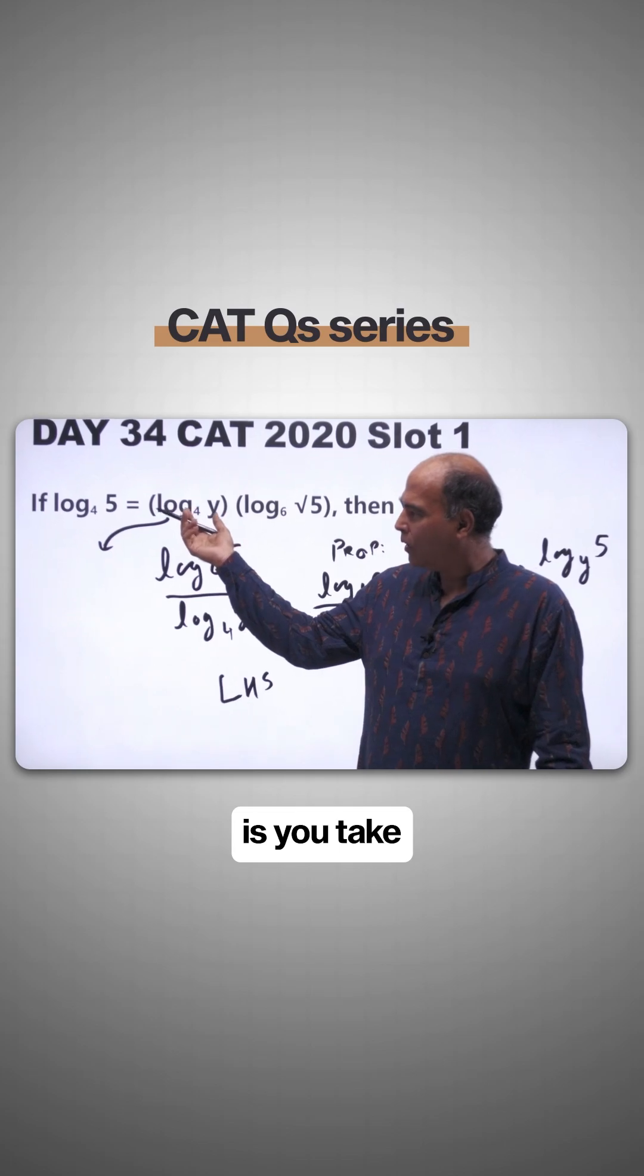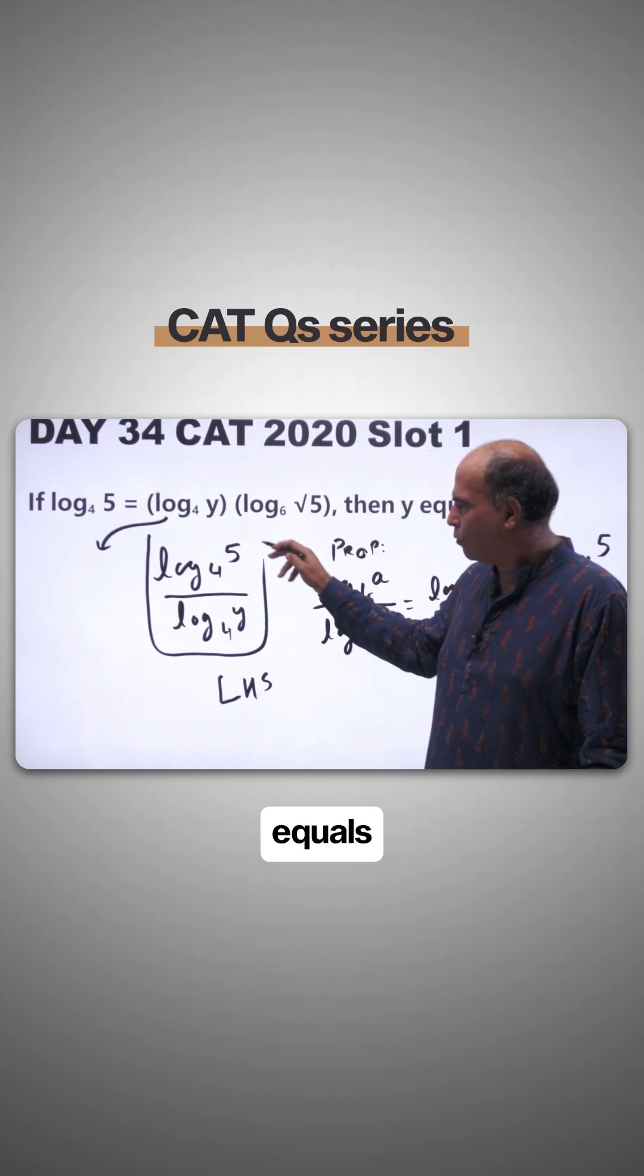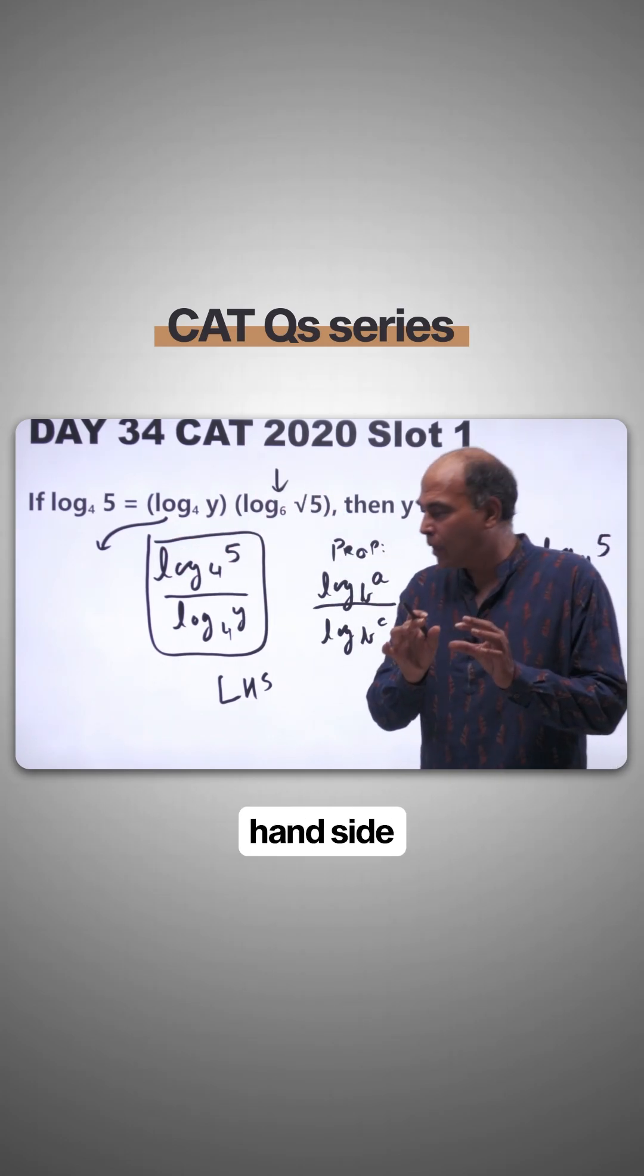First, take this part to the left hand side. When you do that, you get the left hand side of the expression equal to this, which equals the right hand side. We'll look at the right hand side later.